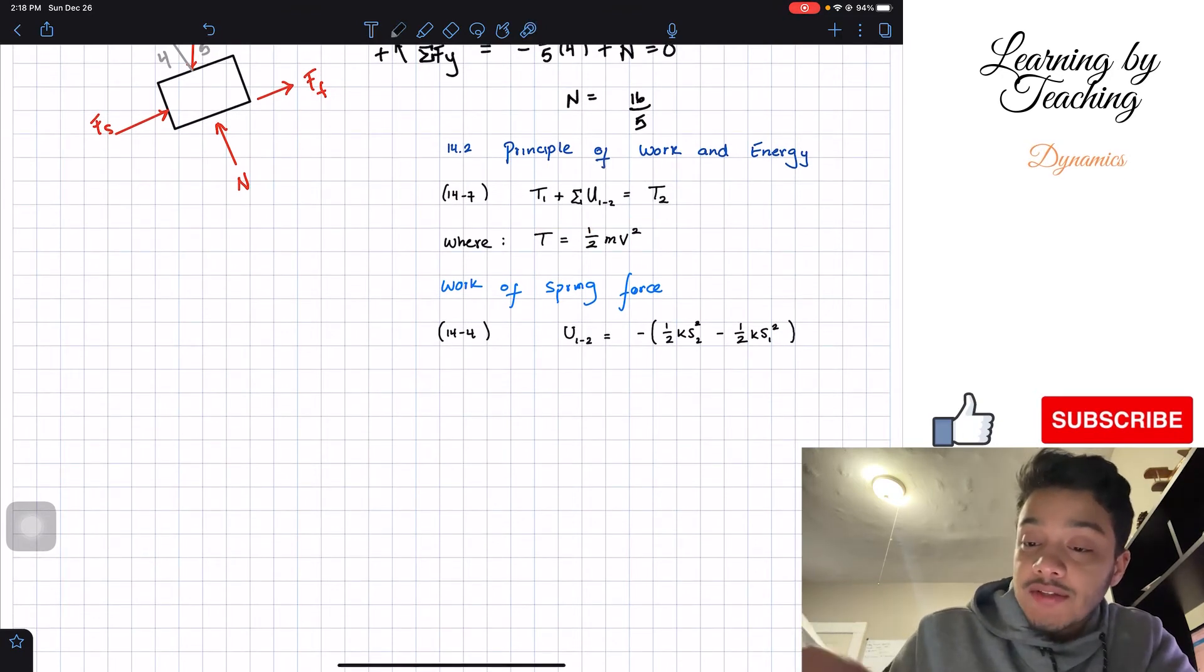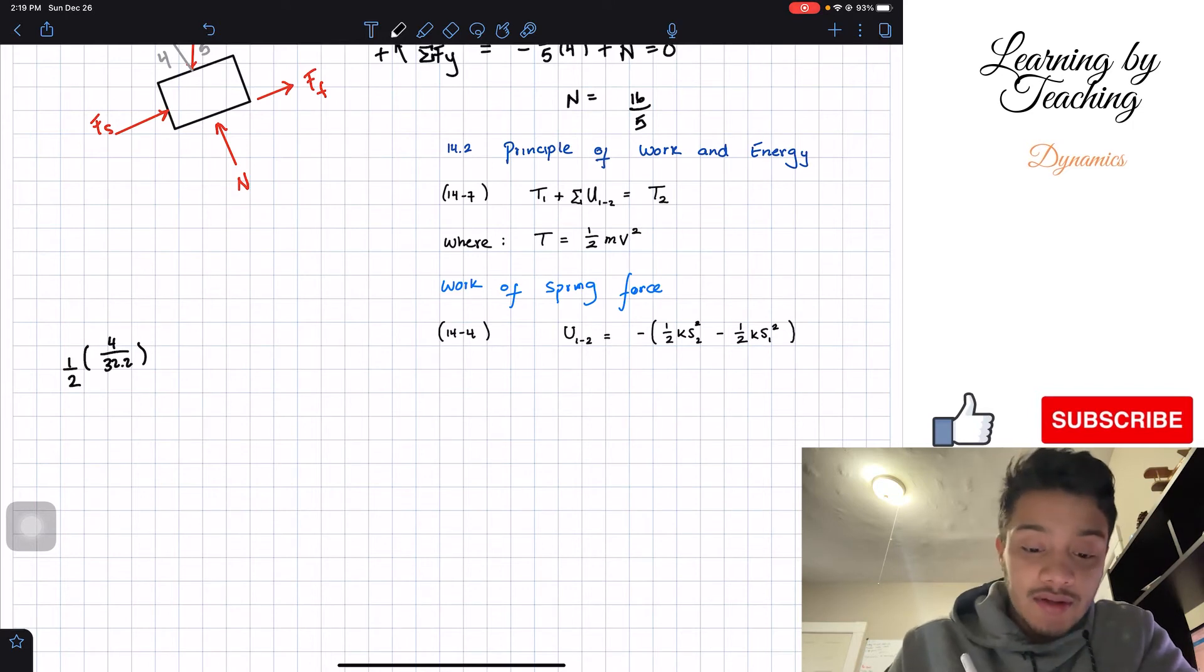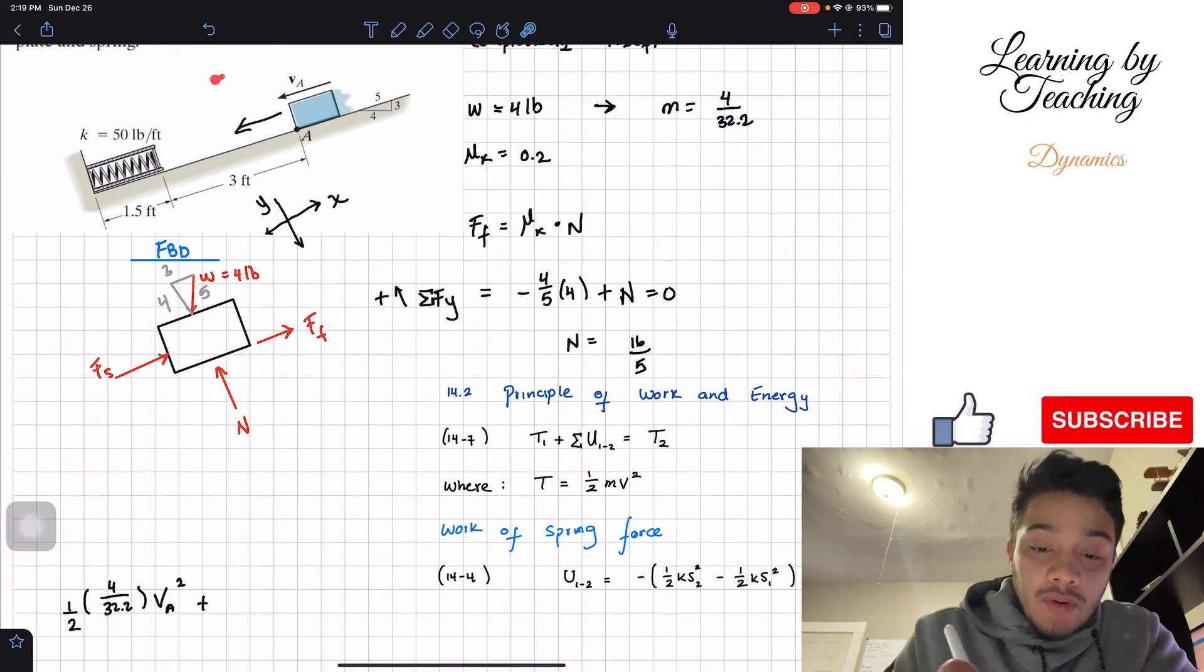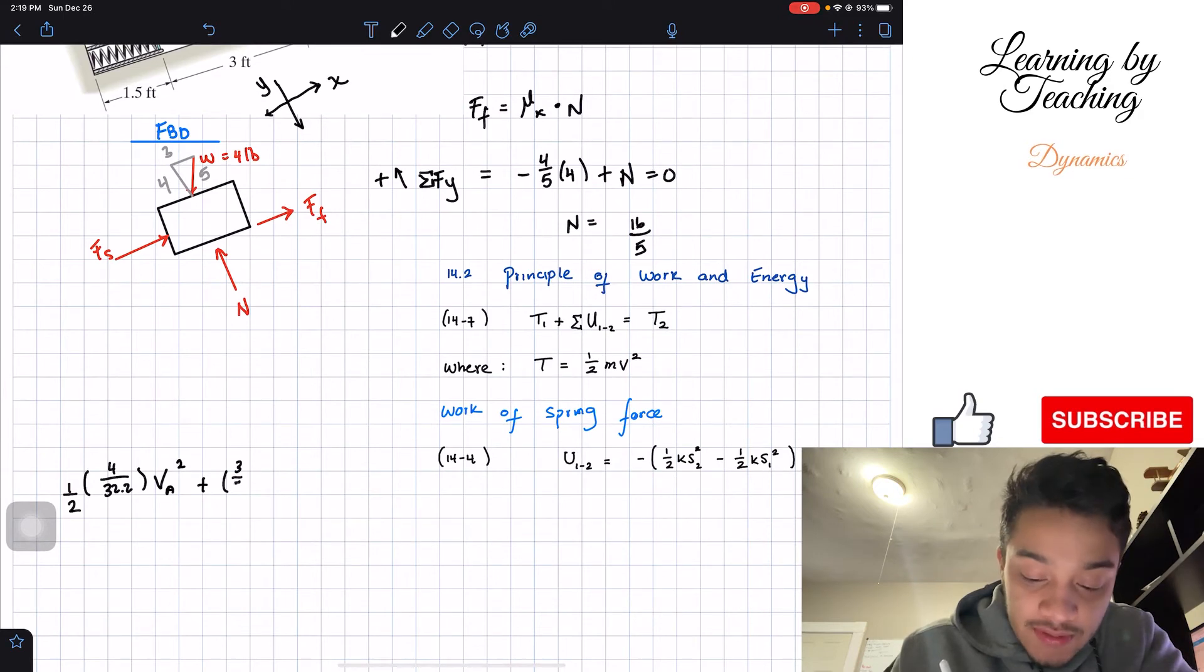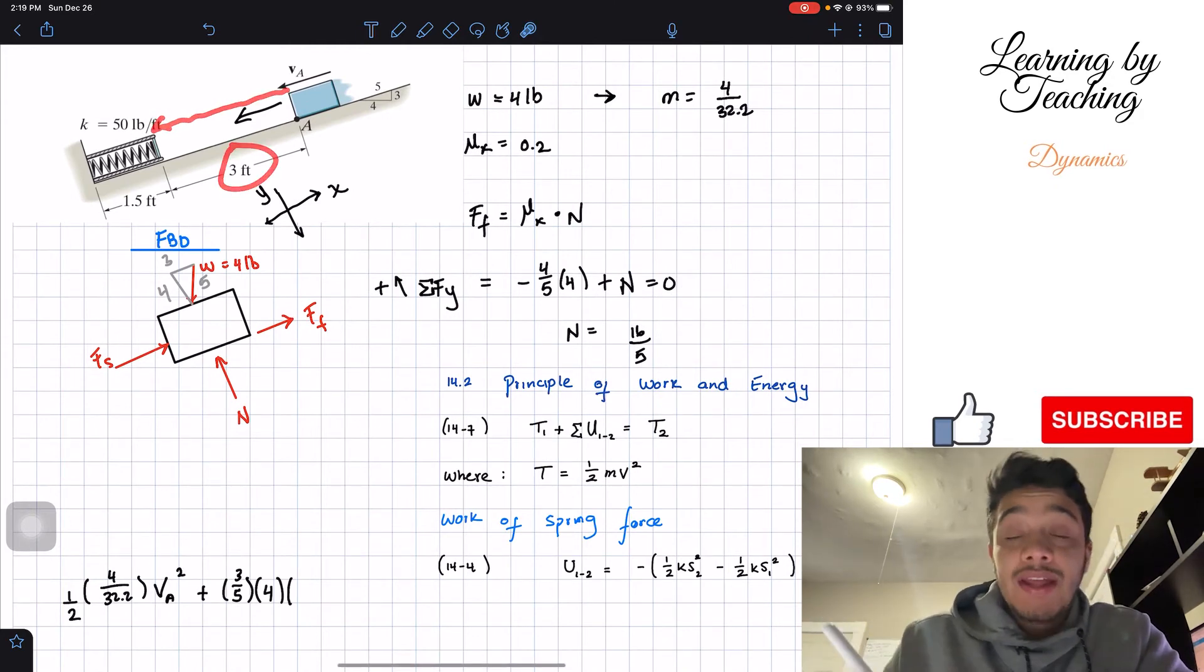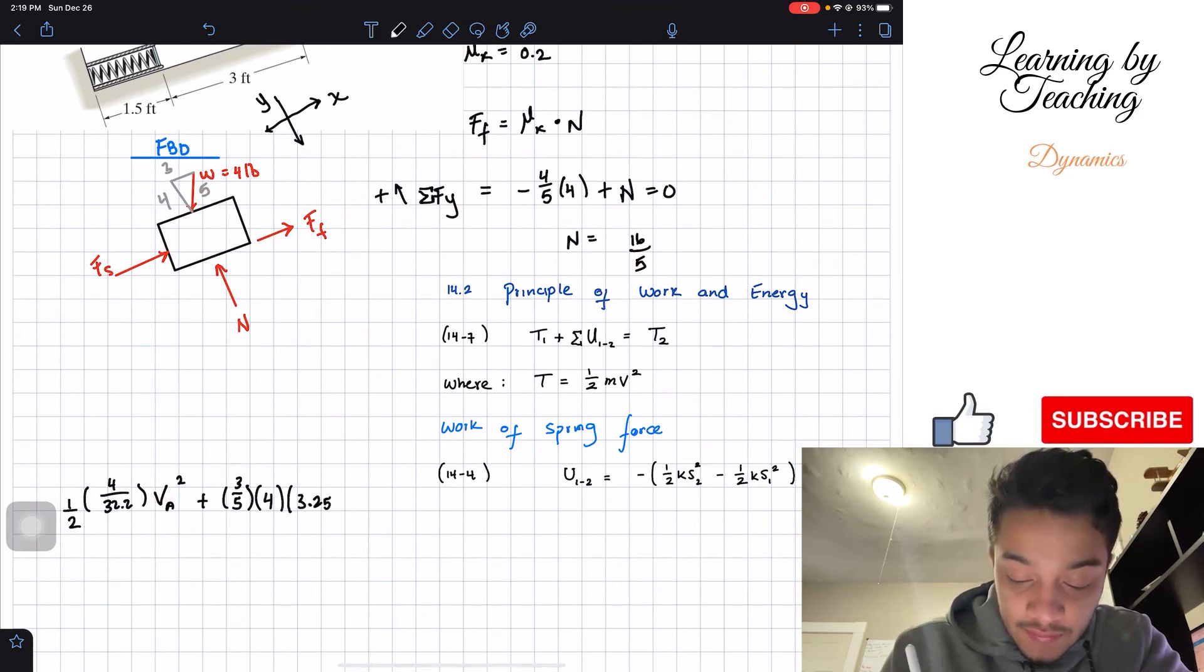So let's start with this equation. We got T1. Well, T1 is going to be one half the mass, which is 4 over 32.2, times the velocity. Well, this velocity at A is the initial velocity, meaning the velocity that we want to find. So I'm going to write it v_A squared. What else do we have? Then we have the summation of all the works done by the forces. So which forces do we have? Remember we're moving towards the left. So let's start with which force goes to the left. Well, the weight does a little bit of force towards the left. It does 3 fifths. So we got 3 fifths of the force of the weight times the distance. So what is the distance? Well, the distance that it traveled in order to hit this was 3 feet. But in addition, it moved the spring 0.25. Therefore it moved 3.25 feet.